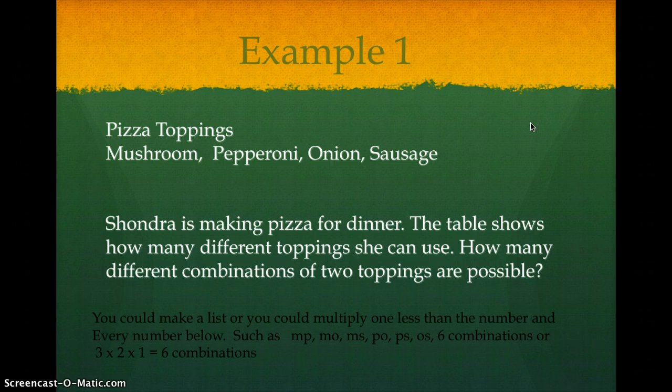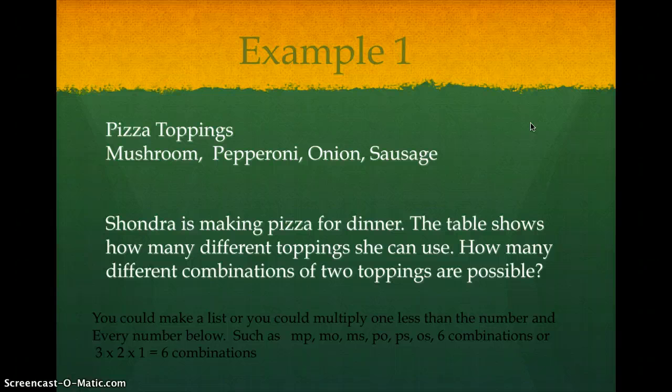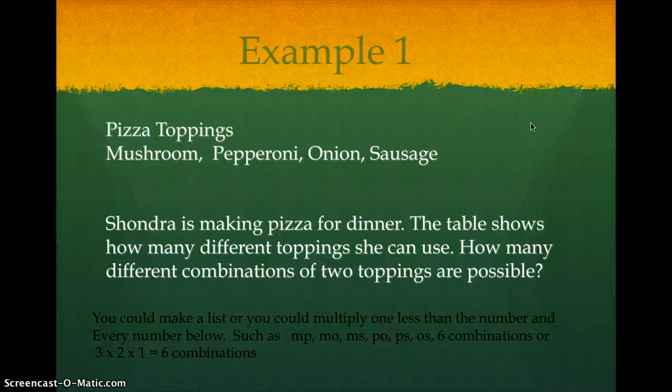You could make a list or you could multiply one less than the number and then every number below that. So for example, I just did the first letter of each of the toppings. So MP for mushroom pepperoni, MO for mushroom onion, MS for mushroom sausage.